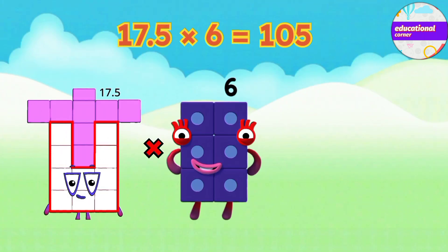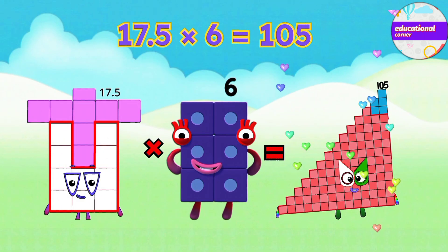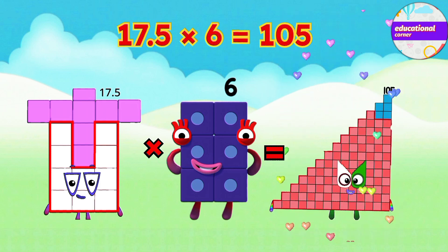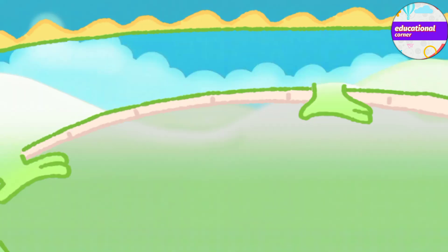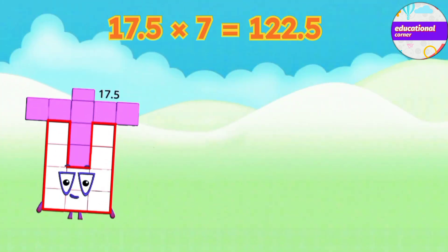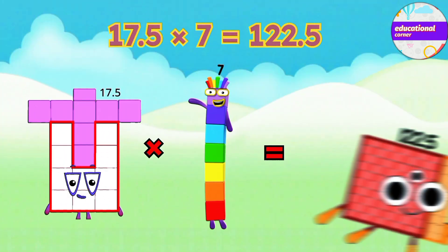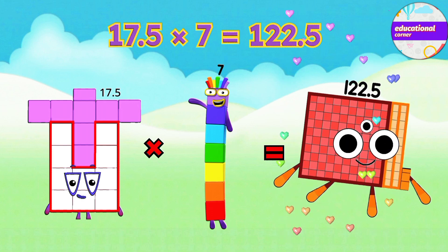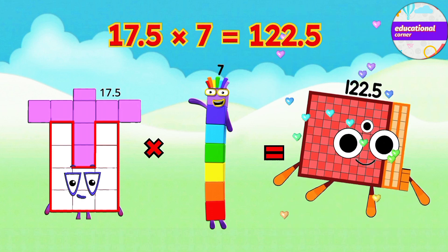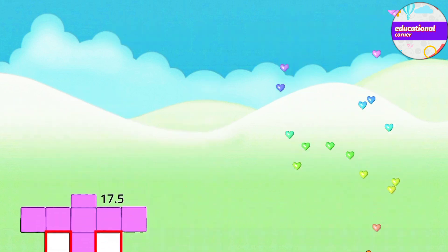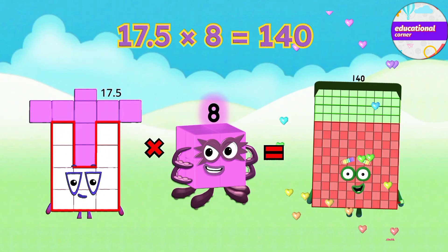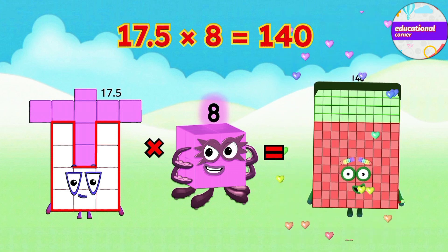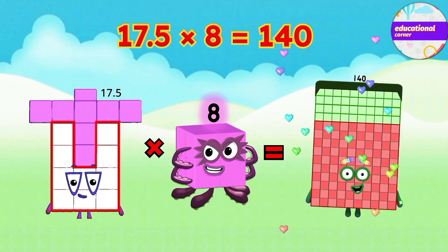17.5 multiplied by 6 equals 105. 17.5 multiplied by 7 equals 122.5. 17.5 multiplied by 8 equals 140.